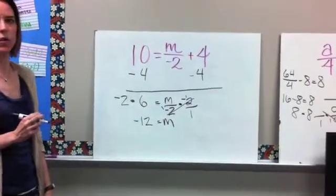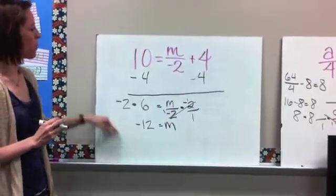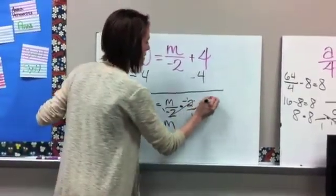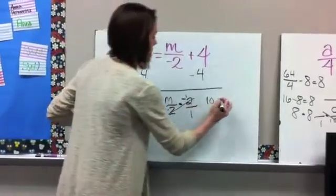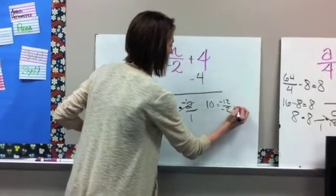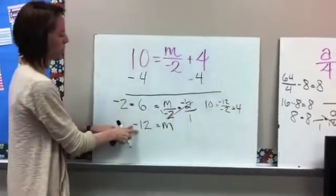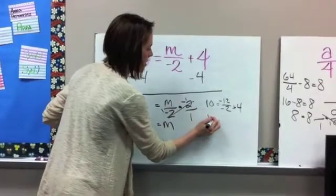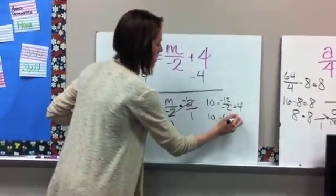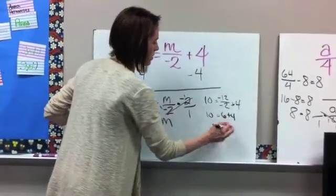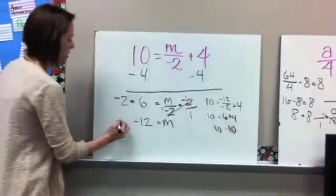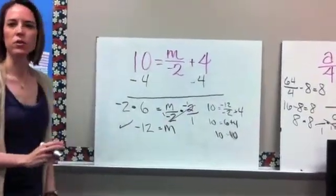Okay, so that means that m is equal to negative 12. So let's go ahead and we're going to plug it back in to make sure that it works. So that means we have 10 equals negative 12 divided by negative 2 plus 4. All I did was plug in negative 12 for m. So now I have 10 equals negative 12 divided by negative 2 is 6 plus 4. And we know that 6 plus 4 is equal to 10. So that means that that answer works.